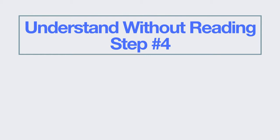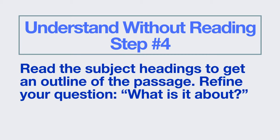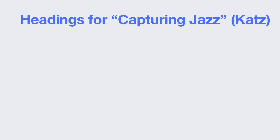How to understand without reading, step number four: read the subject headings to get an outline of the passage, and refine your question — what is it about? Not all passages will have subject headings. If yours doesn't, you can skip this step, or look for larger spaces in the text that set off sections, and provide your own headings using the next step. But if your text has headings, look at them and see if you can get more information and refine your question.